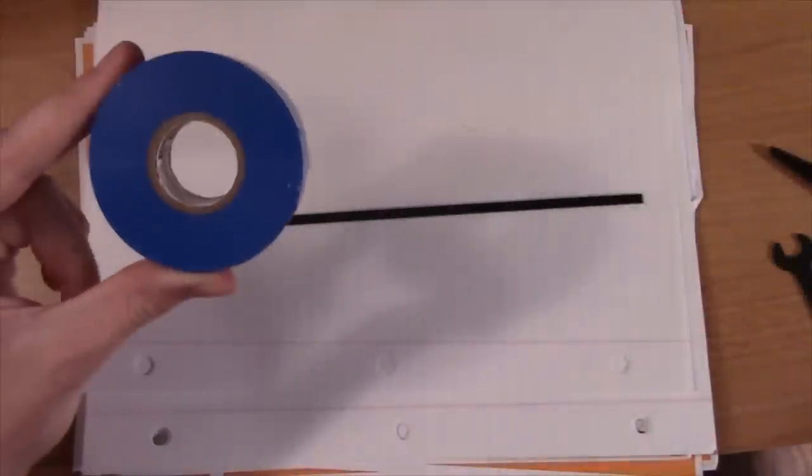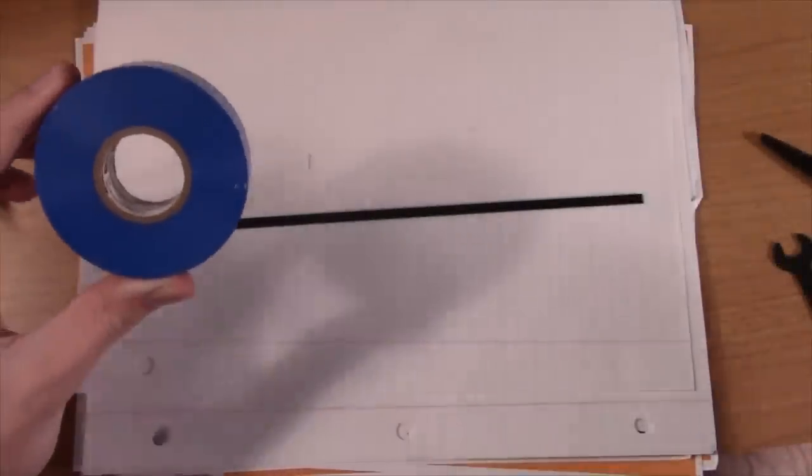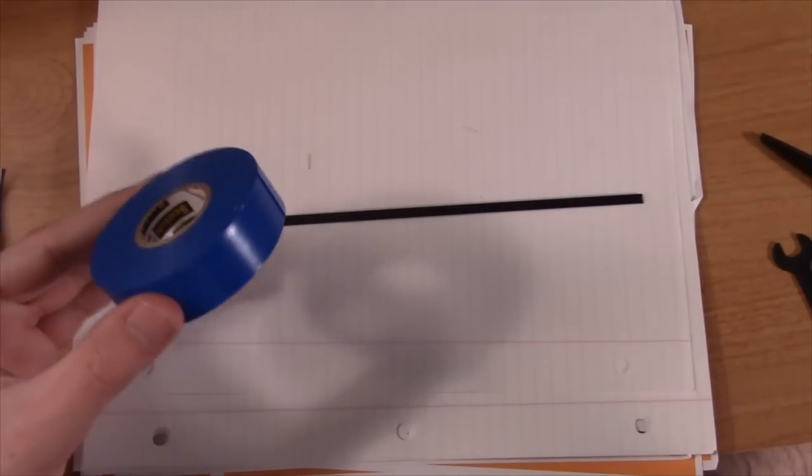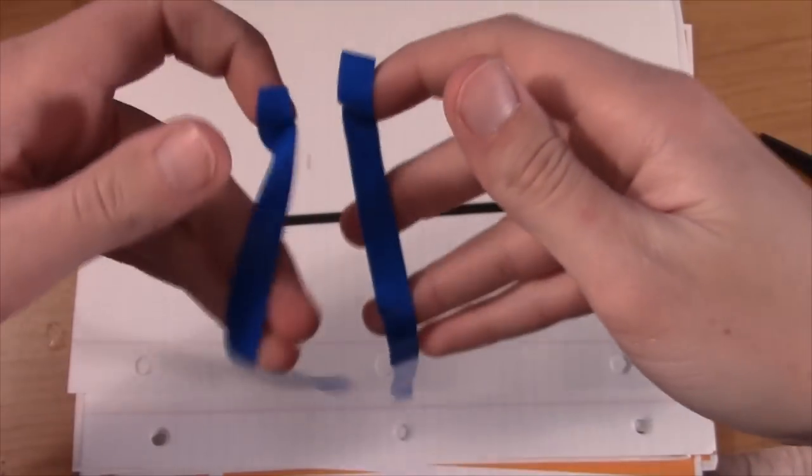This step is optional, but I highly recommend it. Wrapping our bow with electrical tape will prevent it from splintering, make it look cooler, and make it more comfortable to shoot.